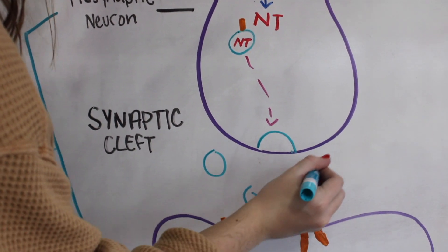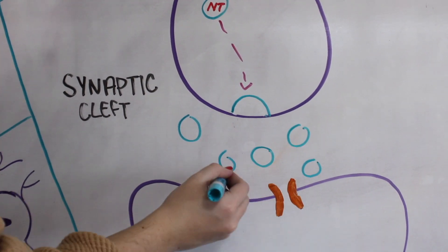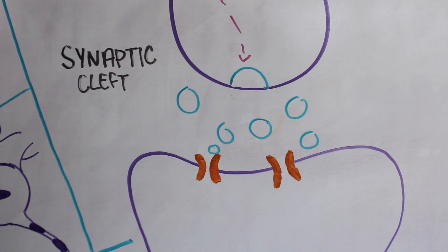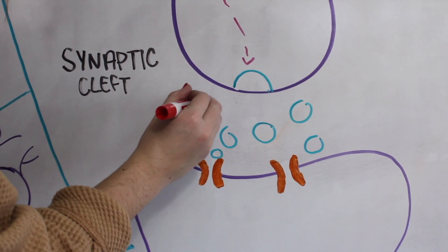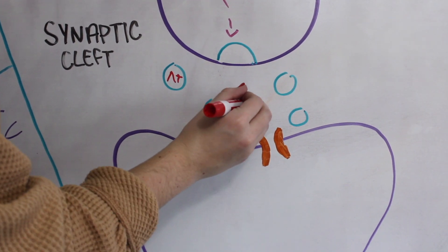When this happens, these synaptic vesicles are able to fuse with the end of the axon terminal and release the neurotransmitter into the synaptic cleft. This movement of the synaptic vesicles is done with the help of a vesicle transporter.